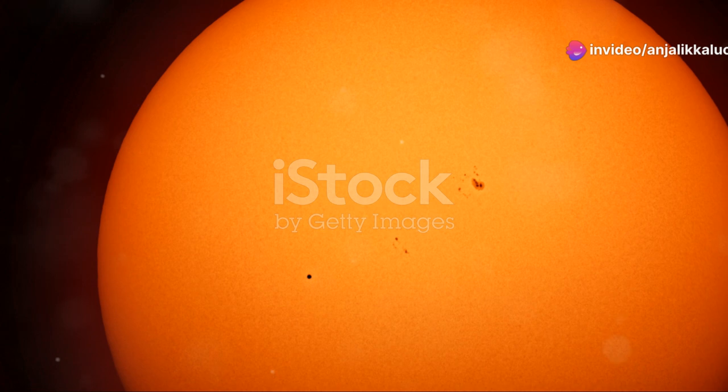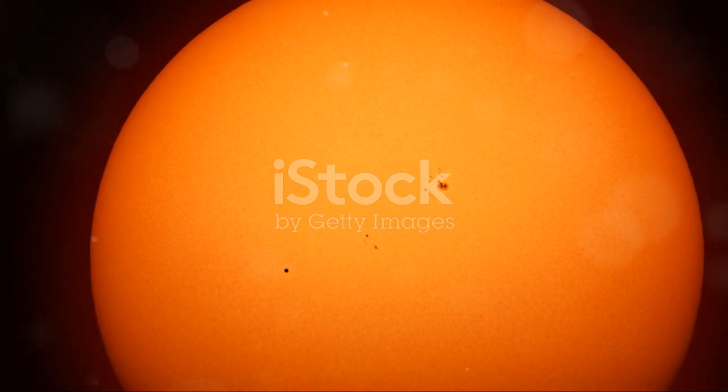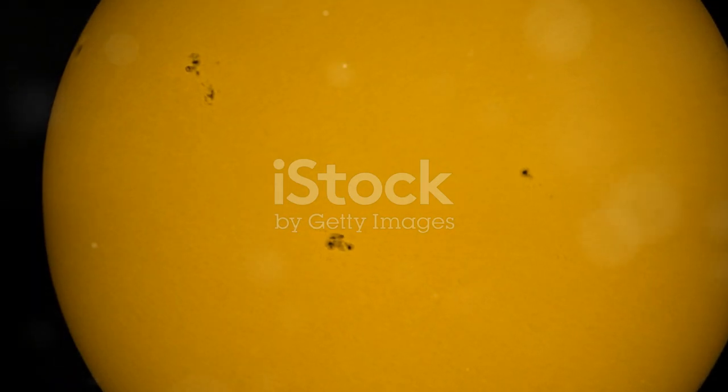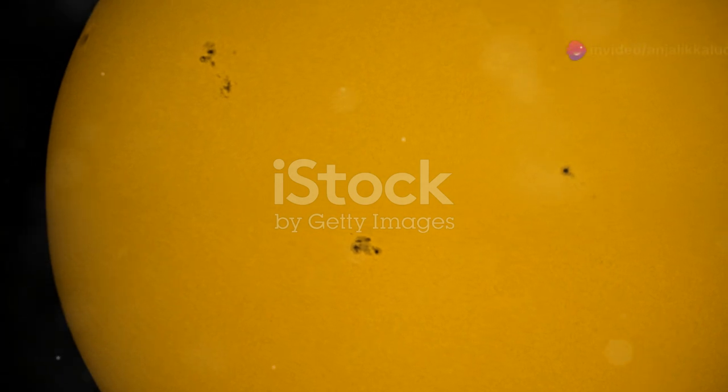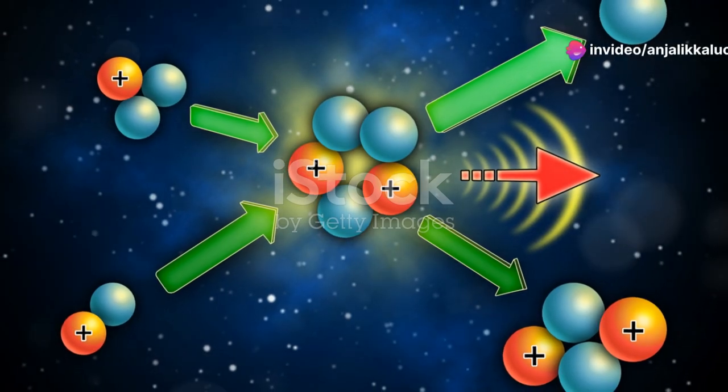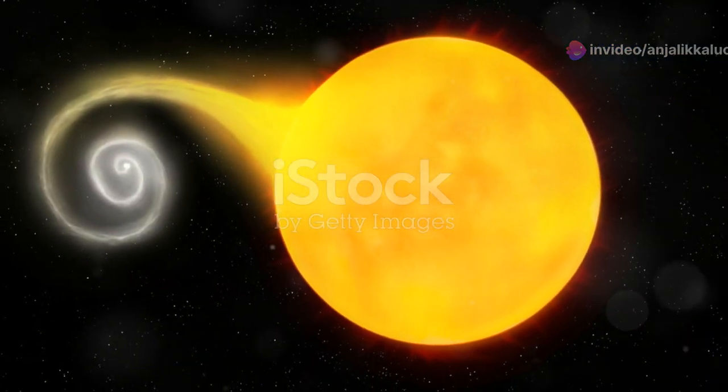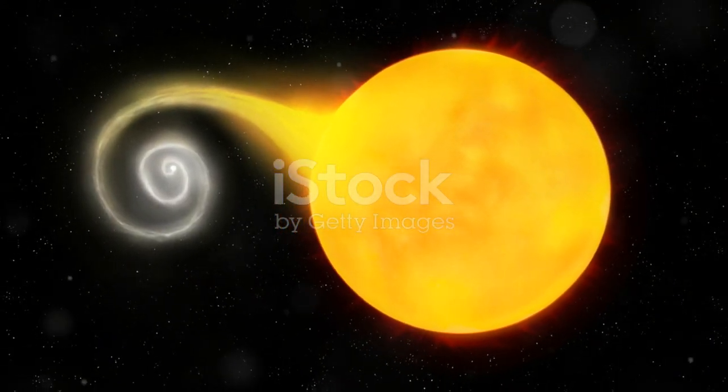As our sun continues its journey on the main sequence, it will slowly change, but it will remain a reliable source of light and heat for billions of years to come. Understanding the main sequence helps us appreciate the delicate balance that sustains our sun and, by extension, life on Earth.